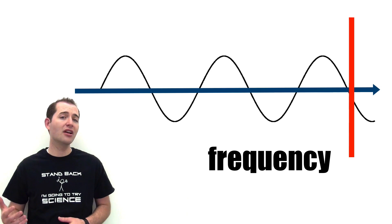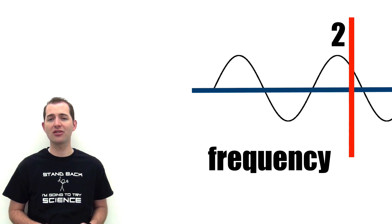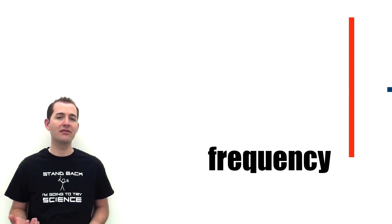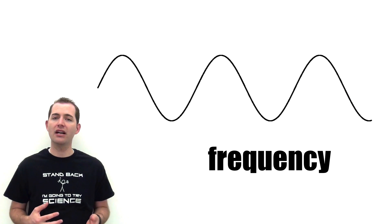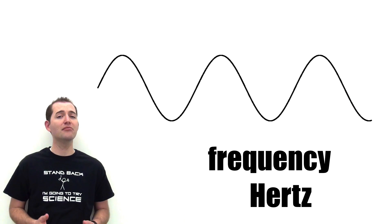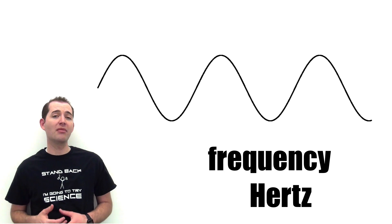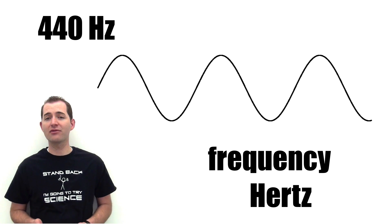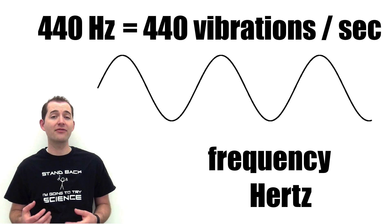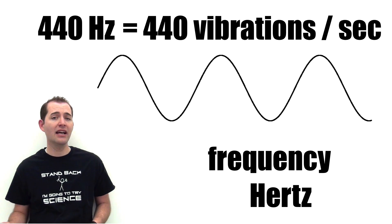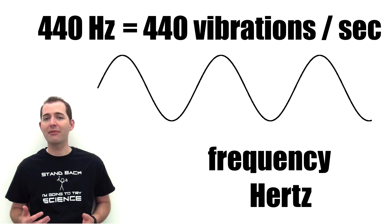Frequency is a measure of the number of waves that pass by a certain point in a certain amount of time. The most common unit of frequency is a hertz and is a measure of the number of waves that pass by a point in one second. For example, a sound wave might have a frequency of 440 hertz. That means there are 440 vibrations every second for that particular note.